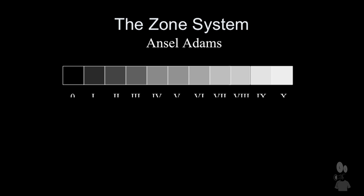So we have Zone 1, 2, 3, 4, 5, 6, 7, 8, 9, 10, and Zone 0. And what we have right in the middle here at Zone 5 is our middle gray — our 18% reflectance.